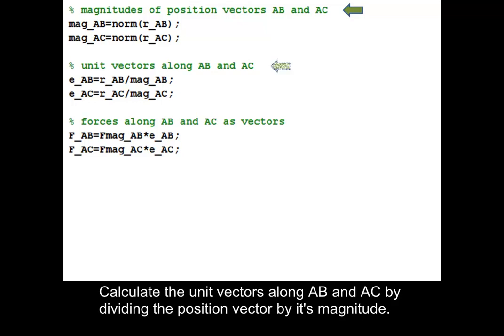Calculate the unit vectors along AB and AC by dividing the position vector by its magnitude.